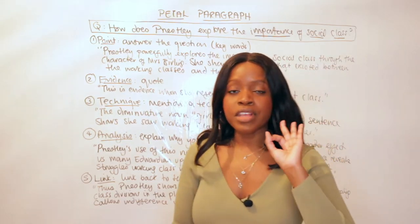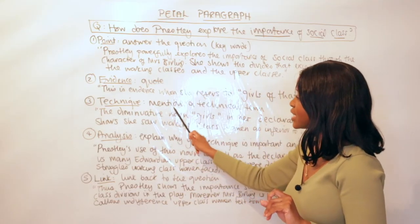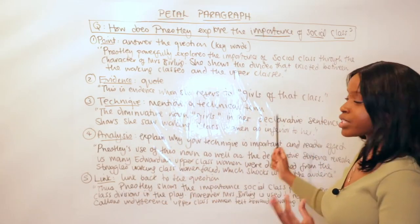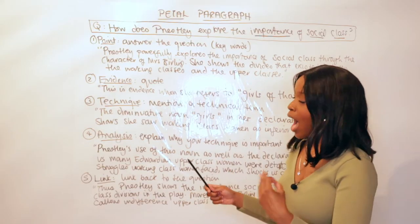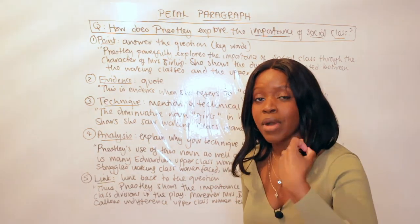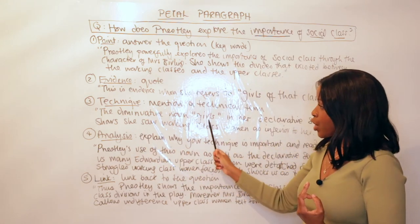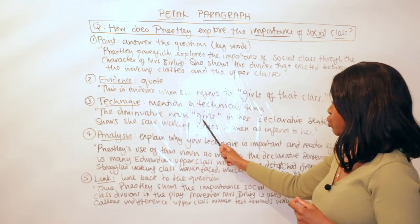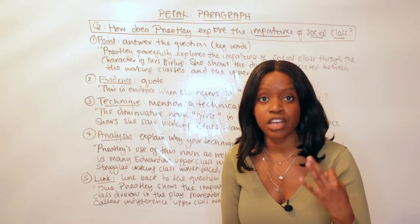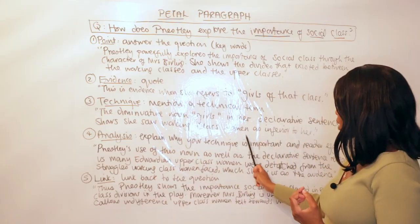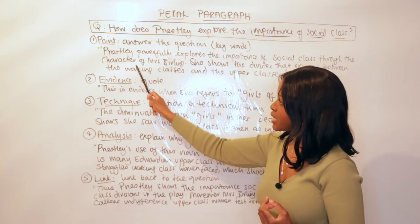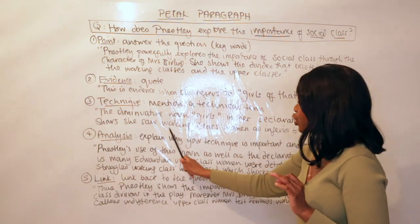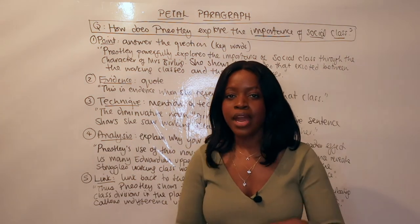The T stands for Technique — you need to identify and mention a technical term within the quotation you've selected. From 'girls of that class', the technical term I identify is the diminutive noun 'girls'. Diminutive means something that makes a subject sound smaller or lesser than it is. So: the diminutive noun 'girls' in her declarative sentence — a declarative sentence being one that states a fact, feeling, or mood — shows she saw working class women as inferior to her.